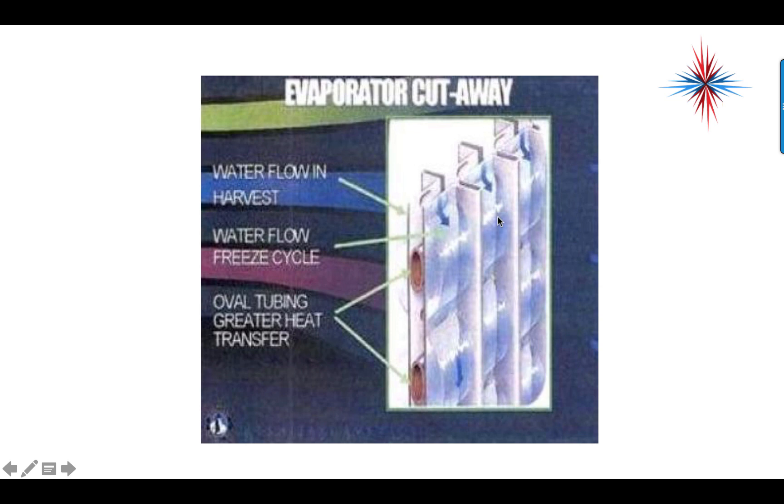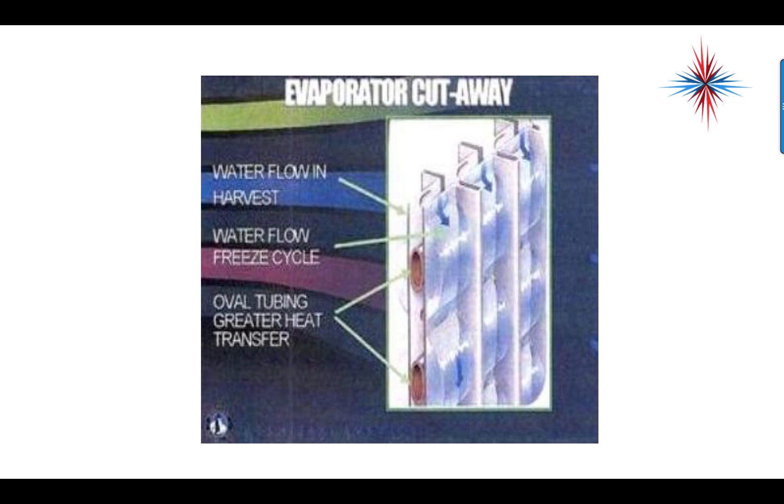There's patterns on these plates depending on how we want the ice to look, and then the water will continue to flow as the machine goes into harvest mode. Once the hot gas hits that ice, it breaks loose from the evaporator and falls off and is strained out of the water.